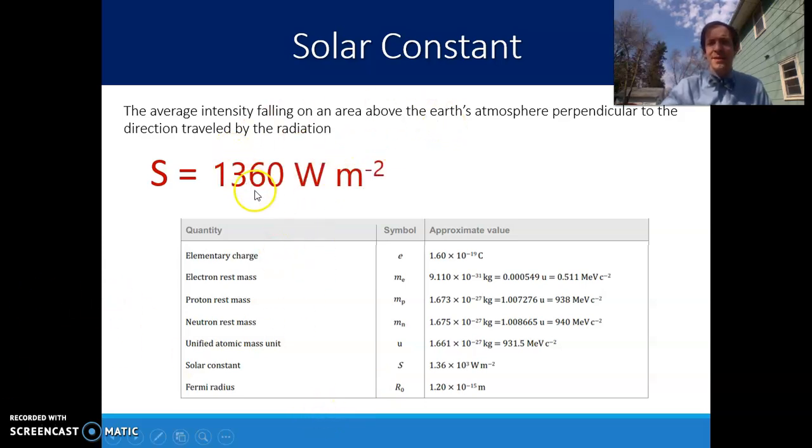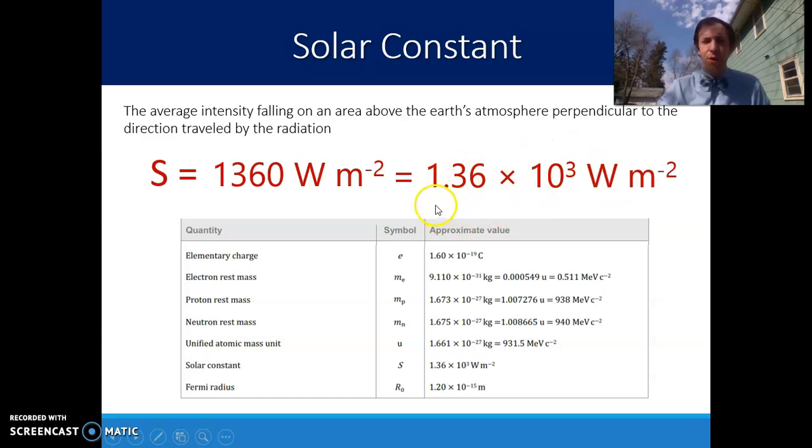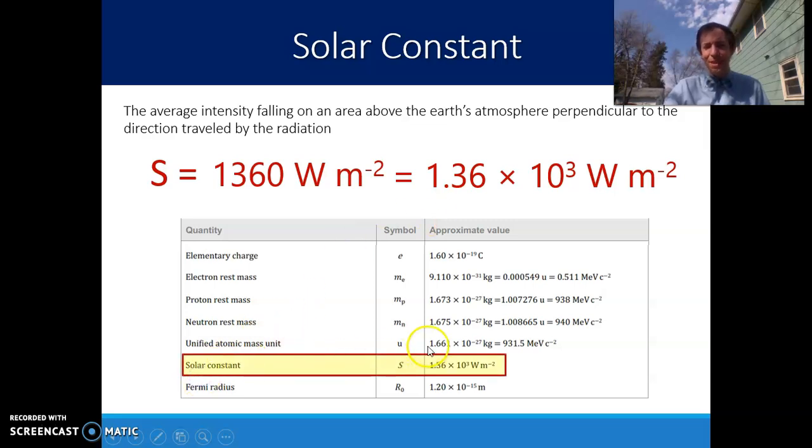So I'm going to copy in what we calculated on the last slide, 1,360 watts for every square meter. A way that this is often presented is in scientific notation. So 1.36 times 10 to the 3rd just does a better job of presenting the actual precision of that. There's only three sig figs that are there. And IB includes this in the data packet as a constant because this is a really important number.